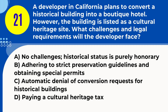Question 21. A developer in California plans to convert a historical building into a boutique hotel. However, the building is listed as a cultural heritage site. What challenges and legal requirements will the developer face? A. No challenges; historical status is purely honorary. B. Adhering to strict preservation guidelines and obtaining special permits. C. Automatic denial of conversion requests for historical buildings. D. Paying a cultural heritage tax. Answer: B. Adhering to strict preservation guidelines and obtaining special permits. Explanation: Developers in California converting historical buildings face challenges like adhering to preservation guidelines and obtaining permits that respect the building's cultural heritage status.